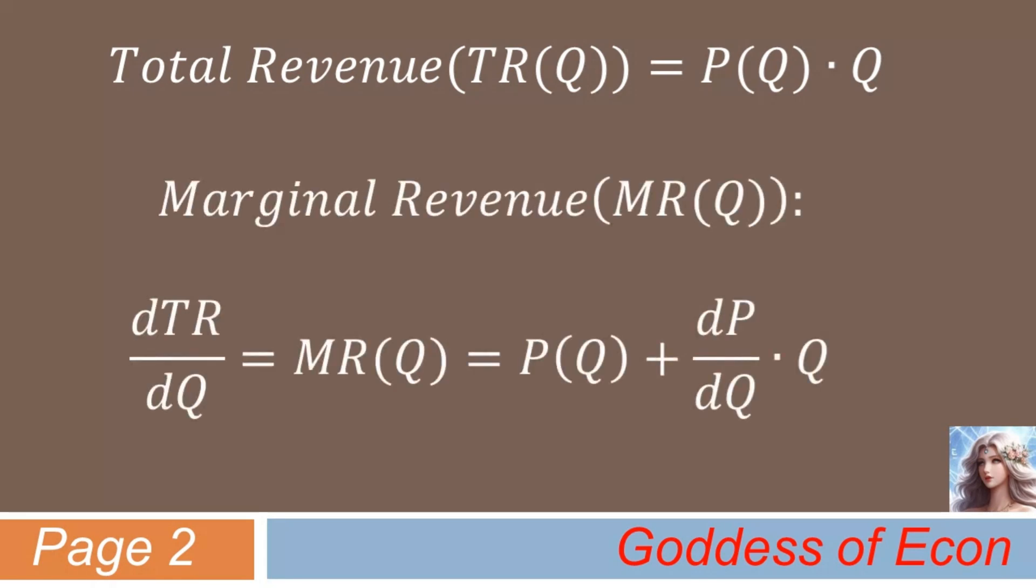Given that marginal revenue is simply the first derivative of the total revenue function with respect to Q, we can see that MR equals P of Q, plus dP dQ times Q. Not too difficult so far, as all we did was some simple math.